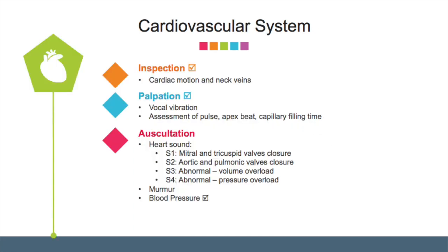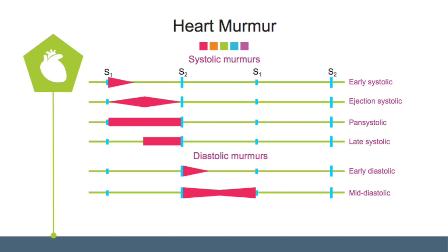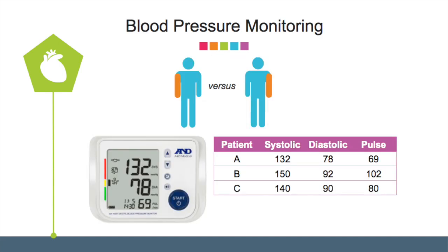The next system is the cardiovascular system. Inspect the neck vein for elevated jugular venous pressure. The pharmacist should also be very familiar with blood pressure measurement. In measuring blood pressure, do you think the readings between the left and right arms will be different? Look at the blood pressure readings for patient A, patient B, and patient C — what can you conclude?